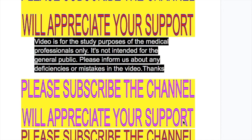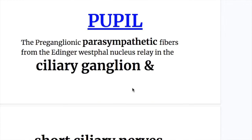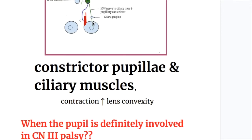We will discuss pupillary abnormalities in oculomotor nerve palsy and also pupillary abnormalities in other conditions. The pre-ganglionic parasympathetic fibers from the Edinger-Westphal nucleus relay in the ciliary ganglion. From the ciliary ganglion, the short ciliary nerve supplies the constrictor pupillae that constricts the pupil and the ciliary muscles that increase lens convexity when they contract.